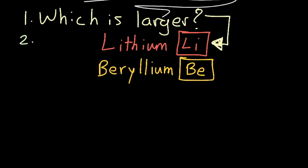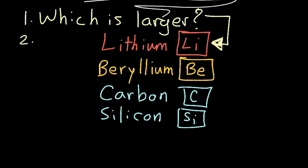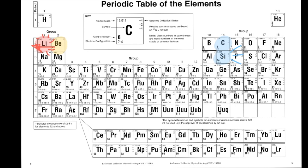Number two, carbon, element C, versus silicon, Si. Who has the larger atomic radius? Silicon will be larger because it is lower than carbon.